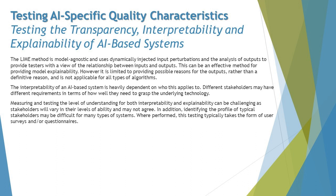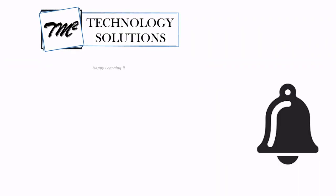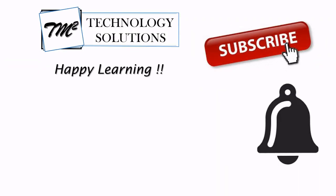Identifying the profile for typical stakeholders may be difficult for many types of systems. This type of testing typically takes the form of user surveys or questionnaires. Having a broad range of stakeholders is important, as a limited set may not provide all the information needed to understand what exactly needs to be tested.